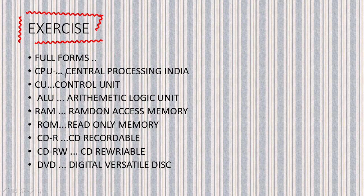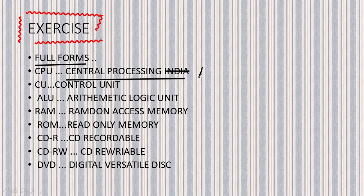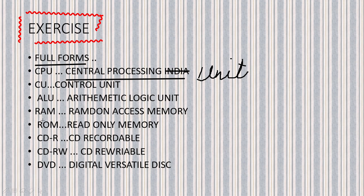Your first full form is CPU — Central Processing Unit. Your next full form is CU — Control Unit. ALU — Arithmetic Logic Unit. RAM — Random Access Memory.